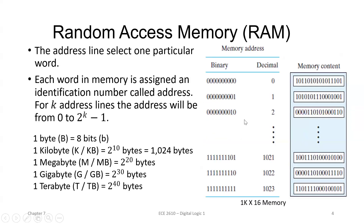This typical example shows a 1k × 16 memory, which means it has 1k, that is 1024 words, ranging from 0 to 1023. Each word in memory is assigned an identification number called an address, ranging from 0 to 2 power k minus 1. The memory size representations are: 1 byte equals 8 bits, 1 kilobyte equals 1024 bytes, 1 megabyte equals 2 power 20 bytes, 1 gigabyte equals 2 power 30 bytes, and 1 terabyte equals 2 power 40 bytes.